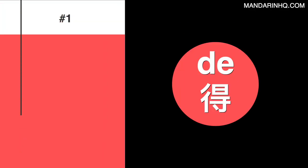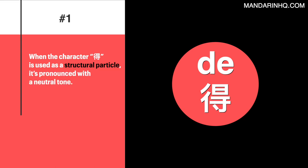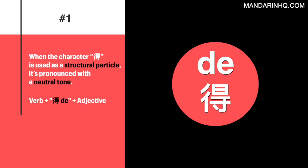Number one: 得 with a neutral tone. When this character is used as a structural particle, it's pronounced with a neutral tone — 得.